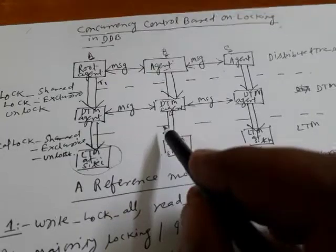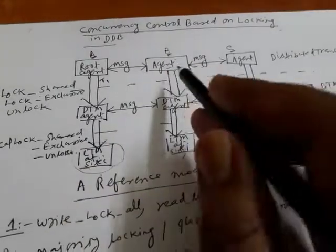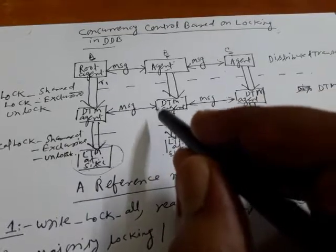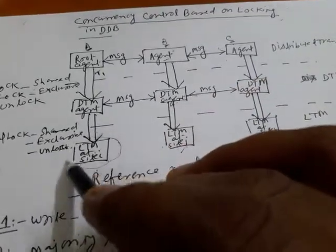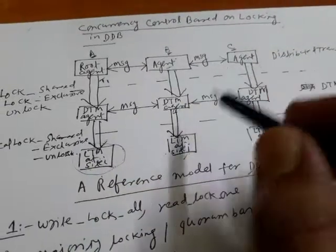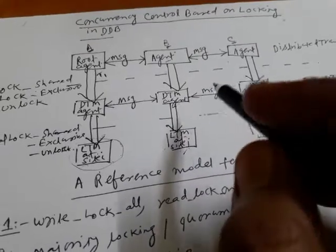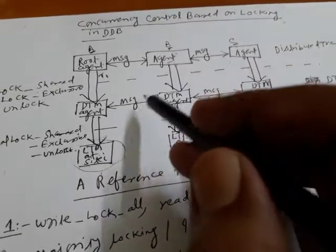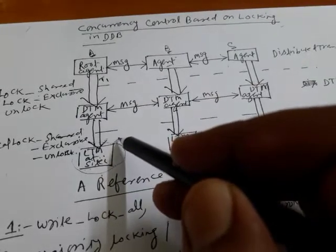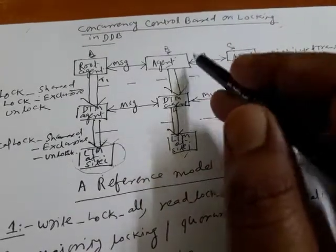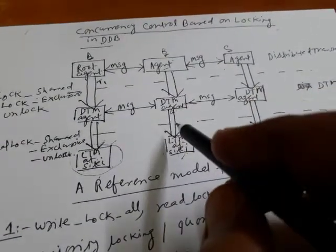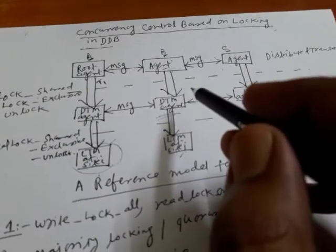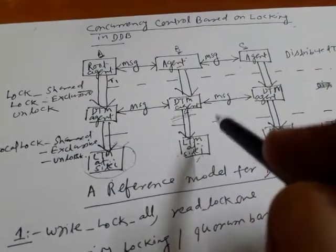When a transaction wants to access the database, it can access from Kolkata; a second transaction can access the data from Delhi and Mumbai because some information is also stored there. We increase data availability so that if the local site in Kolkata fails, we can access from B and C. This redundancy creates a problem for concurrency control — a value updated at 10 AM in one location may not be updated elsewhere, causing data inconsistency. DTM cannot handle multiple-copy locking at the same time.